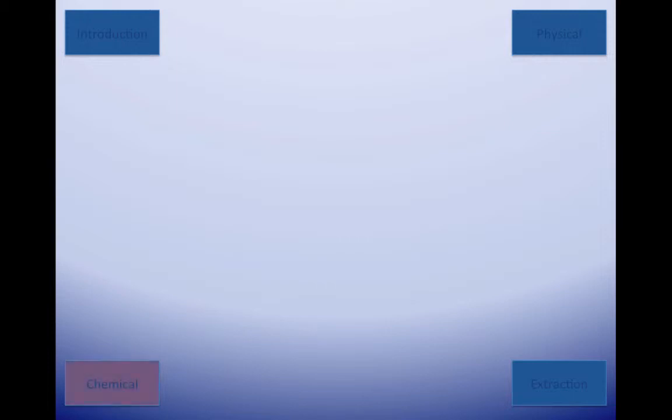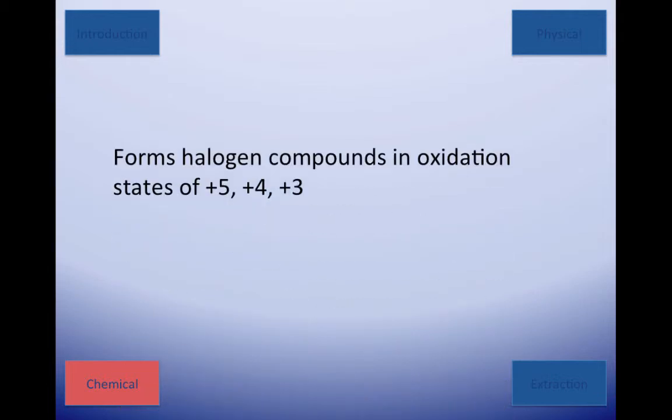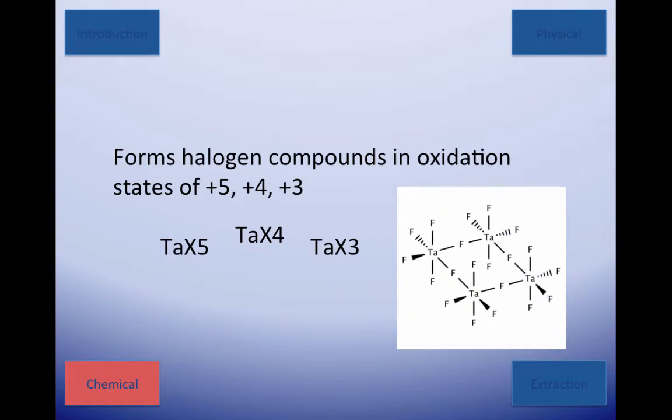Tantalum forms oxides with the oxidation states plus 5 and plus 4. Tantalum pentaoxide is the most stable form. It also forms halogen compounds with the oxidation states of plus 5, plus 4, and plus 3, such as tantalum pentafluoride.